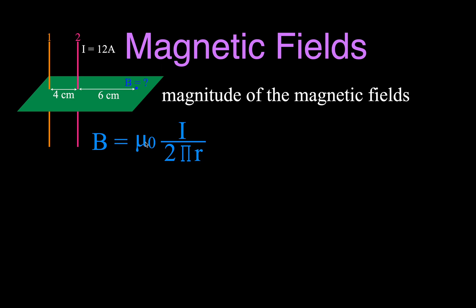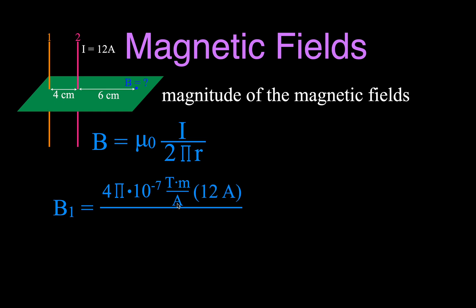The equation says that the magnetic field strength equals mu-zero — the constant permeability of free space — times the current, divided by 2 times pi times r. r is the radius, because the magnetic field from each wire is a circular magnetic field; r is really just the distance from the wire to the point. For wire number one, using the constant 4π×10⁻⁷ T·m/A, a current of 12 amperes, and a distance of 10 centimeters (0.10 m), we get a magnetic field strength of 2.40×10⁻⁵ teslas.